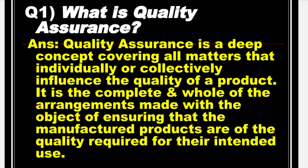Number 1 is: What is Quality Assurance? Answer: Quality Assurance is a deep concept covering all matters that individually or collectively influence the quality of a product. It is the complete whole of the arrangements made with the object of ensuring that the manufactured products are of the quality required for their intended use.